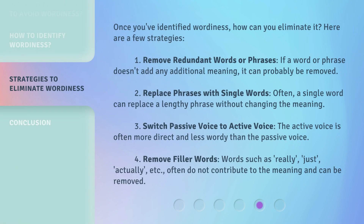Once you've identified wordiness, how can you eliminate it? Here are a few strategies. 1. Remove redundant words or phrases — if a word or phrase doesn't add any additional meaning, it can probably be removed. 2. Replace phrases with single words — often, a single word can replace a lengthy phrase without changing the meaning. 3. Switch passive voice to active voice — the active voice is often more direct and less wordy. 4. Remove filler words — words such as 'really,' 'just,' 'actually,' etc., often do not contribute to the meaning and can be removed.